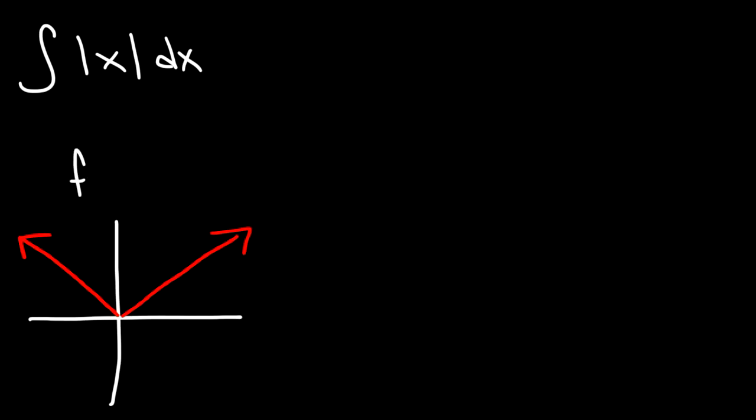So that's the function absolute value of x. On the right side, we have y equals positive x, and on the left side, y equals negative x. So you can break this function down into two parts.